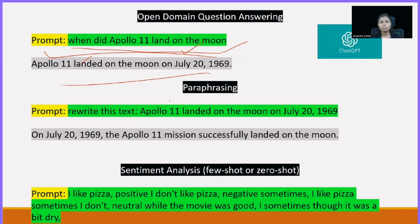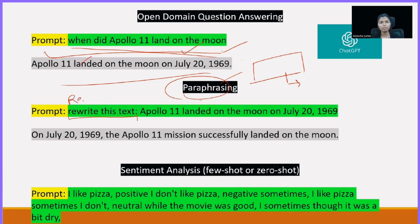Suppose you want to paraphrase — paraphrasing is basically rewriting the same content. So you can write 'rewrite this text' or you can say 'rephrase it,' and in quotations you can write down whatever text you have and follow up with that.